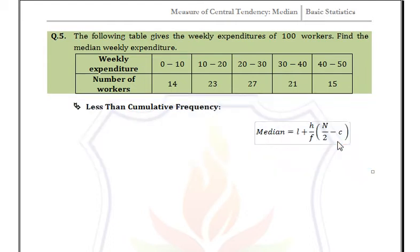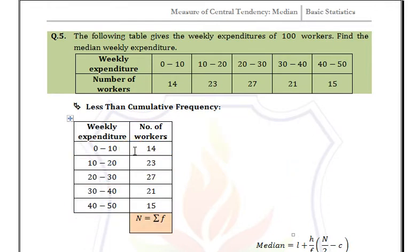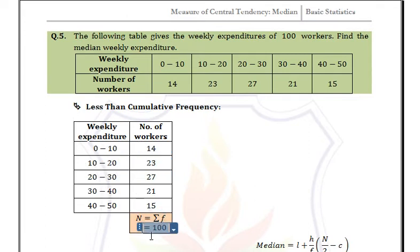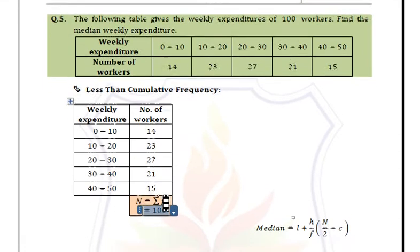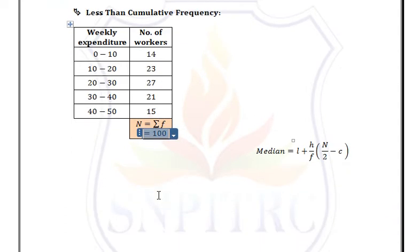Let's create the table. First, find summation F by adding all the frequency values. Here N is 100. Next, define the cumulative frequency in less than form.